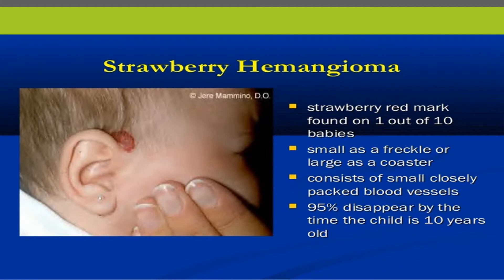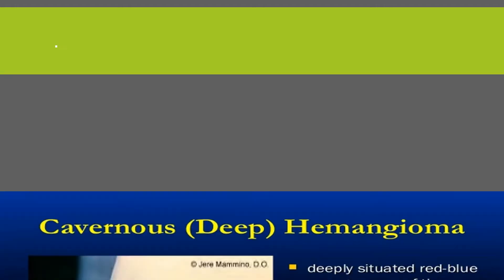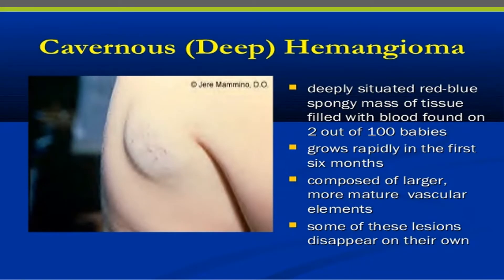Not all hemangiomas are similar. Strawberry hemangioma is a red mark found in one out of ten babies. It can be as small as a freckle or as large as a coaster. It consists of small, closely packed blood vessels, and 95 percent disappear by the time the child is 10 years of age.